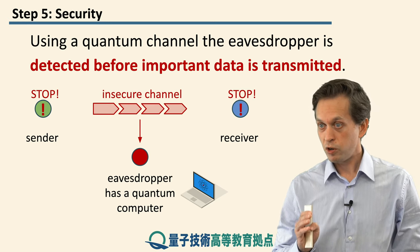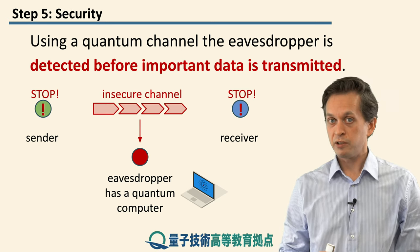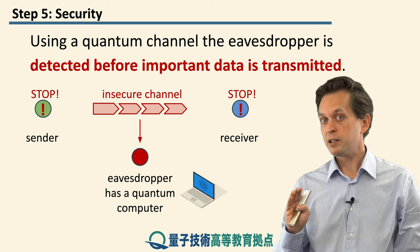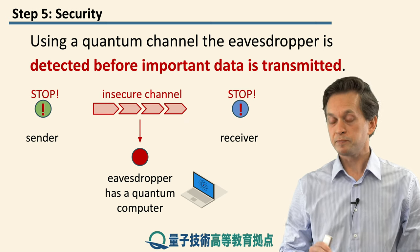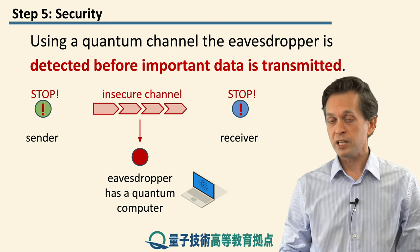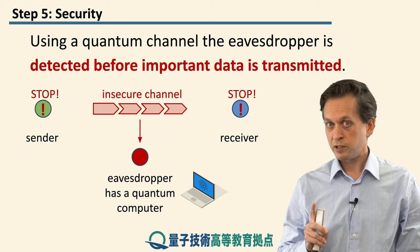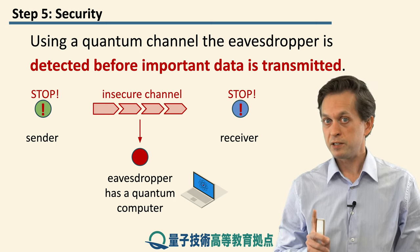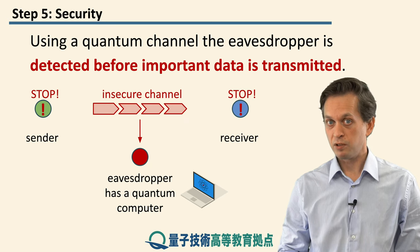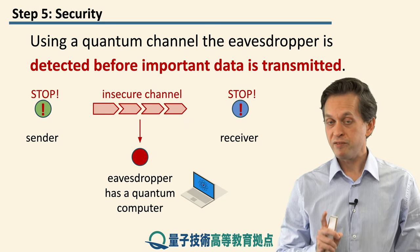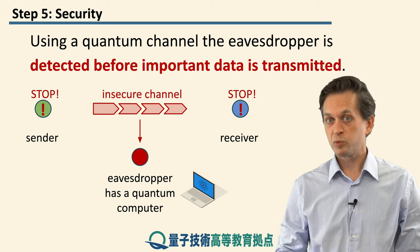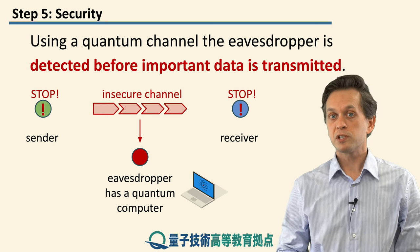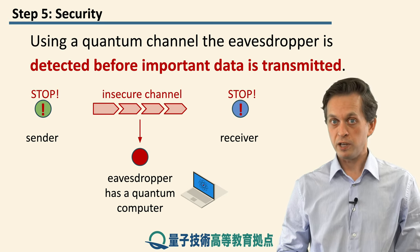So quantum technologies break current encryptions, but on the other hand, they allow for secure communication even in the future. However, this does not mean that encrypting messages quantumly makes them unbreakable — that is not true. What actually happens is, even before you send the message, the eavesdropper becomes detected, and you simply choose not to communicate your sensitive data.